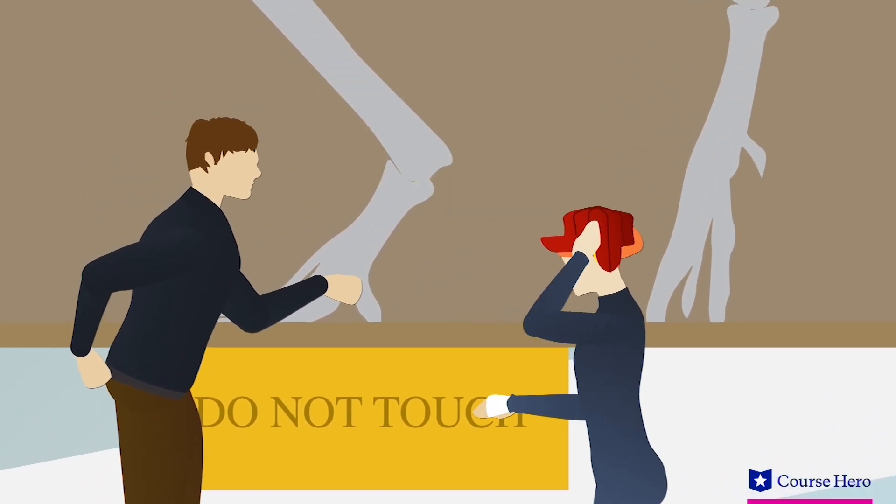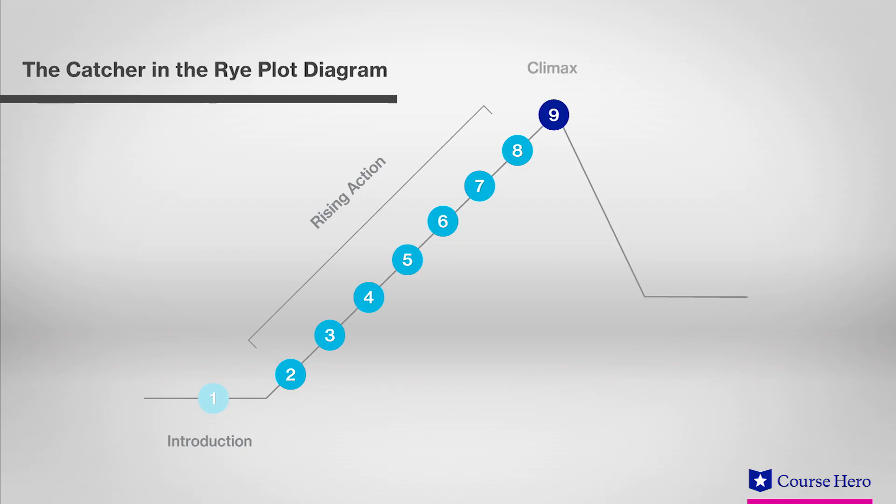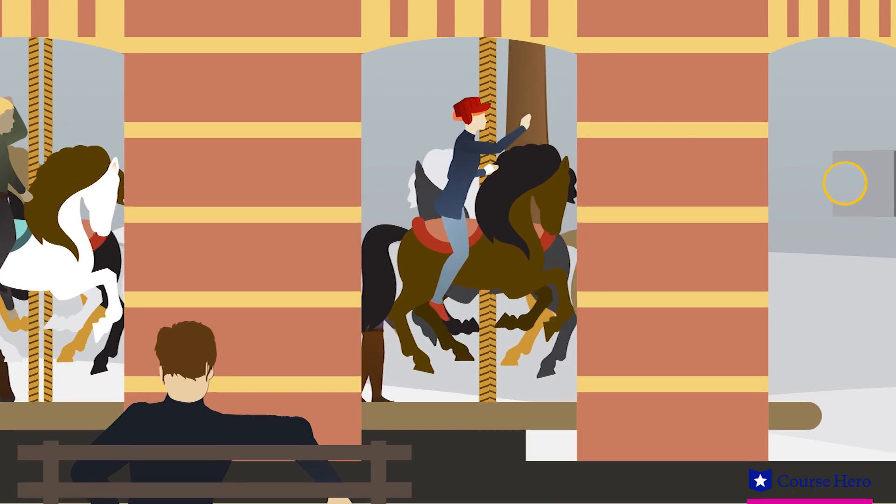He himself decides that he needs to stay too. This builds to The Catcher in the Rye's climax when Holden realizes he must let Phoebe reach for the gold ring. This symbolism is pretty easy to grasp because she's riding a carousel where the children on the horses are actually reaching for a physical brass ring.